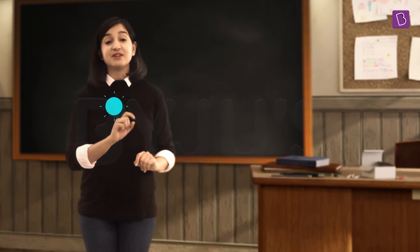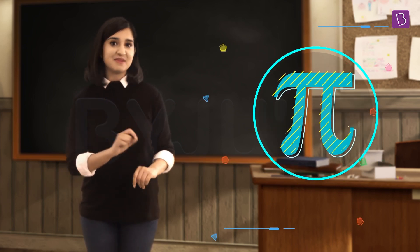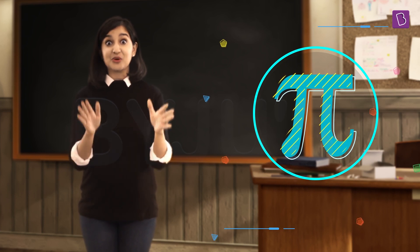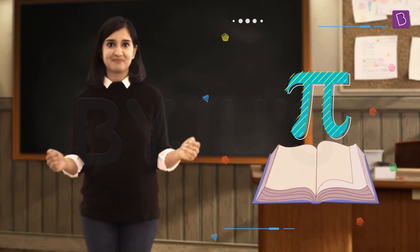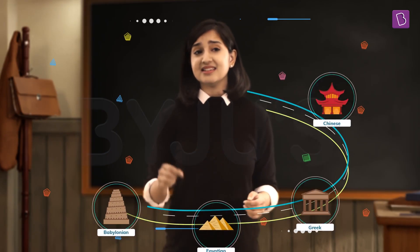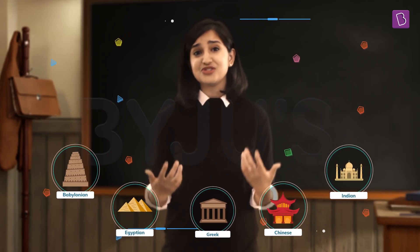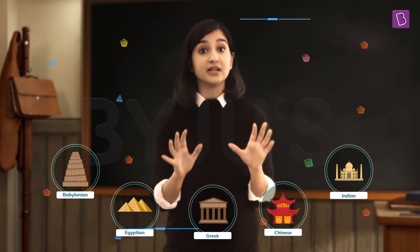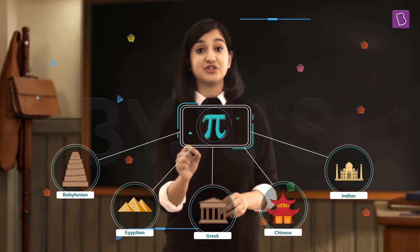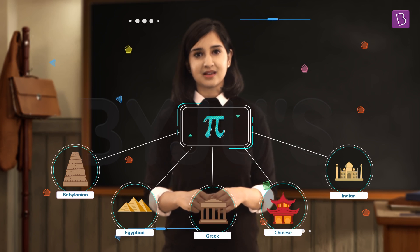Thus, even before the word pi came into existence, the ratio did exist in some form or the other throughout history. Babylonian, Egyptian, Greek, Chinese, and Indian mathematicians have all estimated the value of pi by trying to measure curves, but one aspect of pi remains mysterious: its exact value.